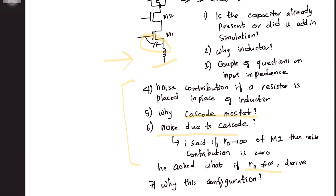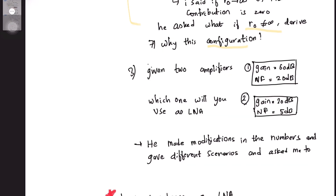They also asked me why I chose that particular LNA configuration for implementation in Cadence. The next question on LNA: he gave me two blocks of amplifiers with their gains and noise figures, and asked me to choose one to use as a low noise amplifier. After I chose one, he made modifications to the numbers and gave different scenarios each time, asking me to choose one block and explain why. He was more focused on my analysis rather than my final answer.